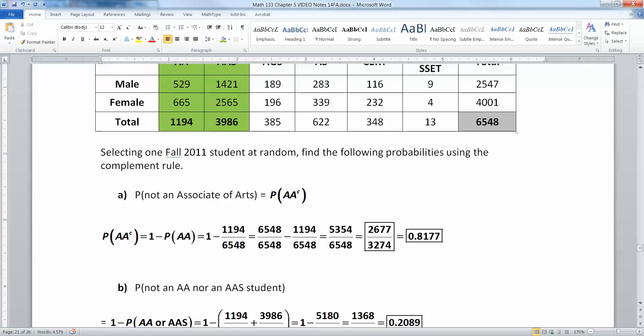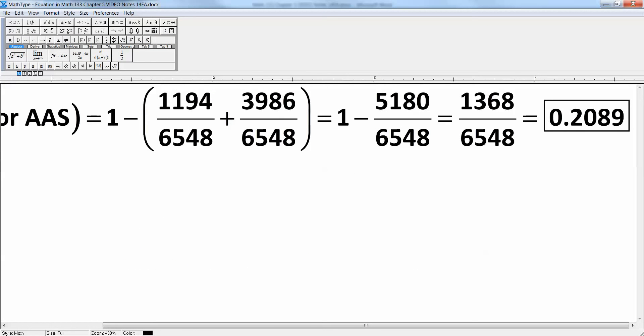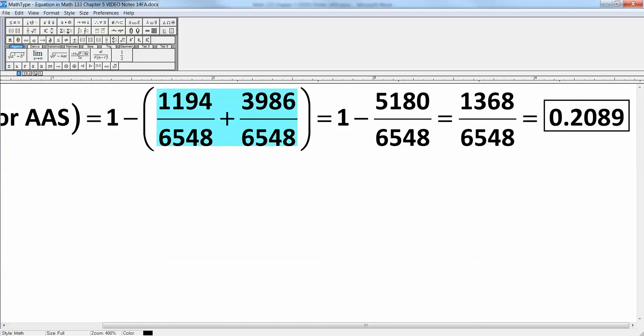What I want to do is I want to figure out what these two numbers are. If I add them up and take away from 6,548, I'll have what this white, squishy middle is in between. So I add up 1,194 and 3,986. So 1,194 plus 3,986, and I get 5,180 right here.